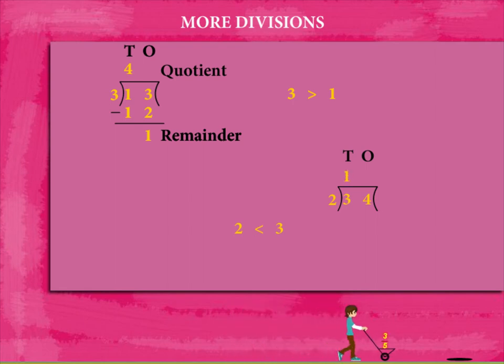So 2 times 1 is 2. Subtract 2 from 3 to get 1. Copy the 4 on the one side to make 14.